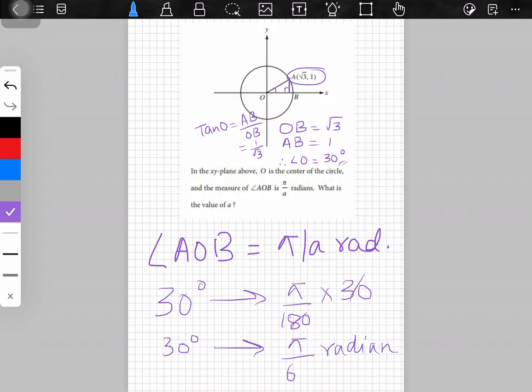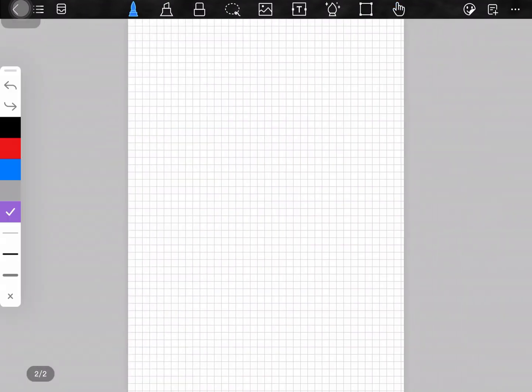This is something that we already know. We just found out and it is said the question says that angle AOB is pi by A radian. So pi by A is the angle of AOB and we have found out that it is pi by 6. So from here we can see that A is equal to 6.